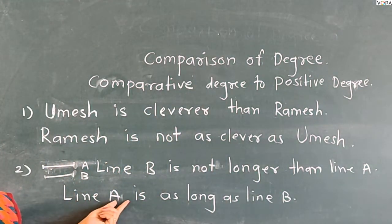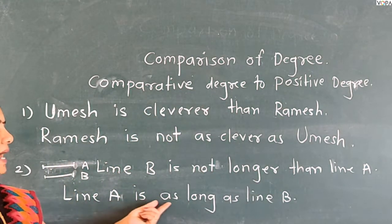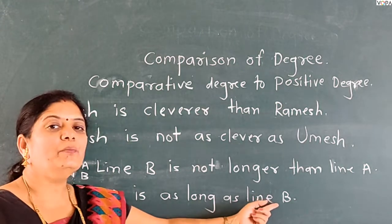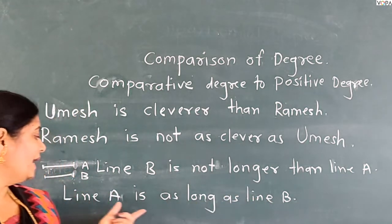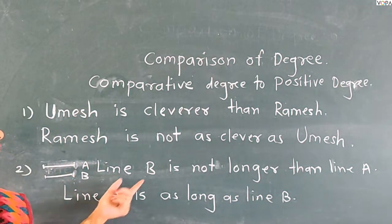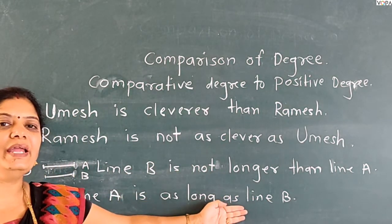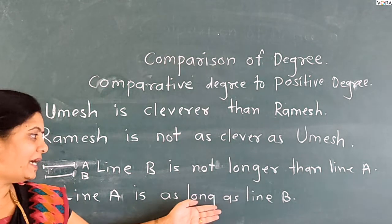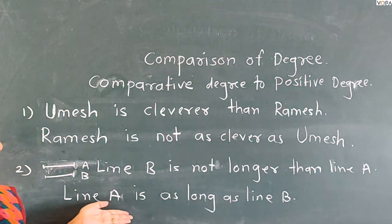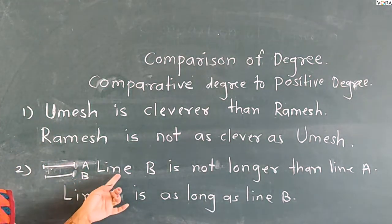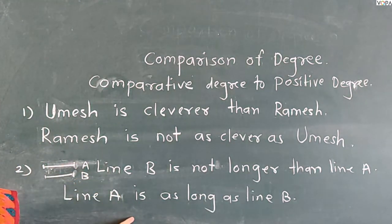Line A is as long as line B. This means both lines are of equal length.